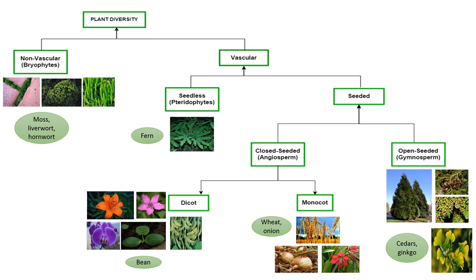Angiosperms bear flowers and seeds are enclosed in fruits. Flowering plants may be either divided into monocotyledon or dicotyledon. Monocots have only one seed leaf inside the seed coat — for example, wheat, onion, and rice. While dicots have two seed leaves — for example, beans, apple, and so on.